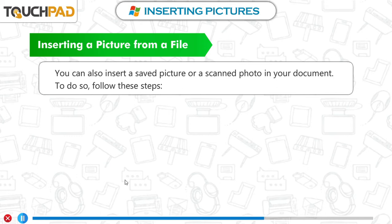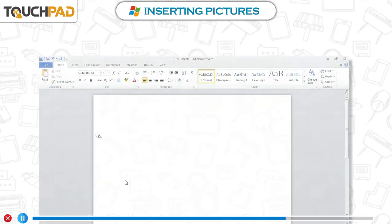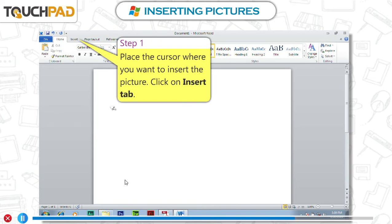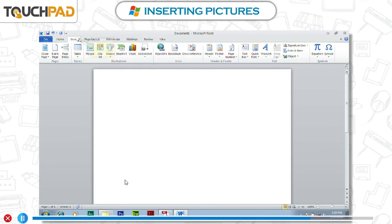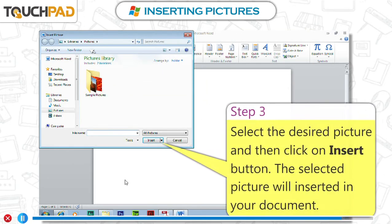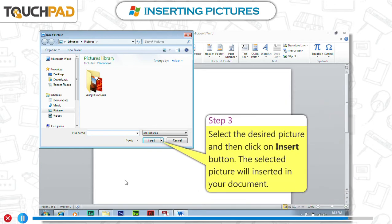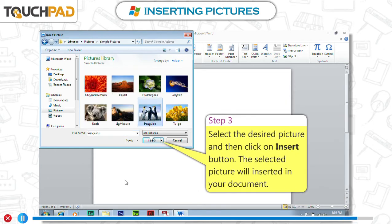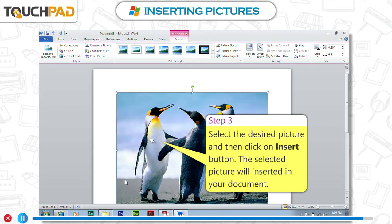Inserting a picture from a file. You can also insert a saved picture or a scanned photo in your document. To do so, follow these steps. Step 1: Place the cursor where you want to insert the picture and click on Insert tab. Step 2: In the Illustrations group, click on the Picture command. The Insert Picture dialog box appears. Step 3: Select the desired picture and then click on Insert button. The selected picture will be inserted in your document.